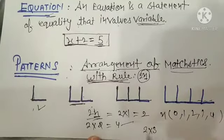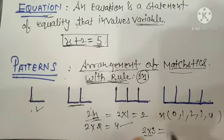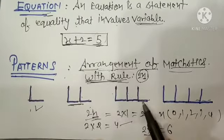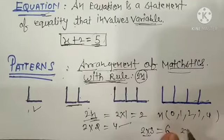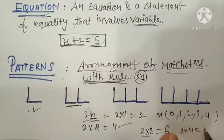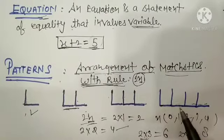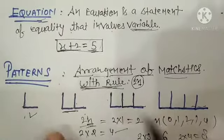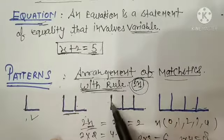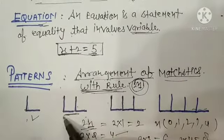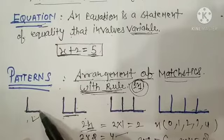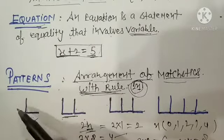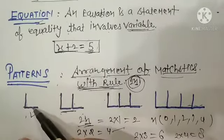In the third position, 2 into 3 gives 6 matchsticks. In the fourth position, 2 into 4 gives 8 matchsticks. This is what we call a pattern, and the formula is the rule. You look at the pattern and make a rule. If there are 2 matchsticks per figure, the rule is 2n. If there are 3 matchsticks per figure, the rule is 3n. If there are 4 matchsticks per figure, the rule is 4n.